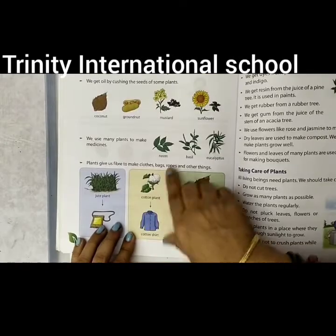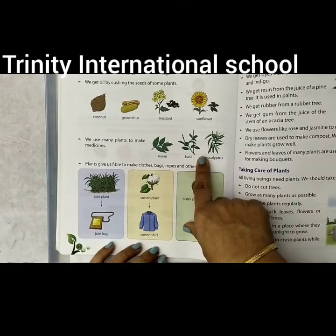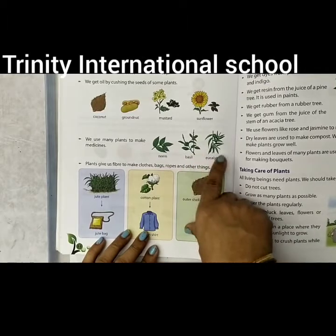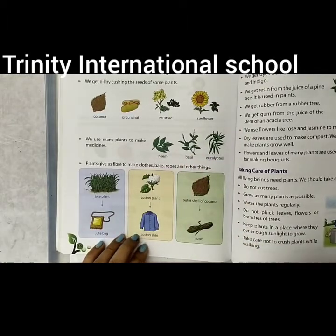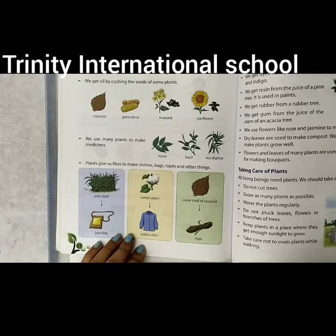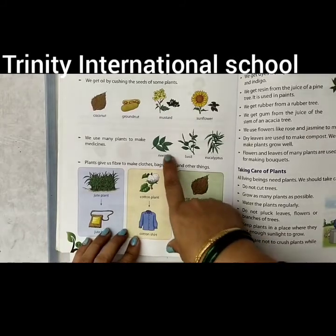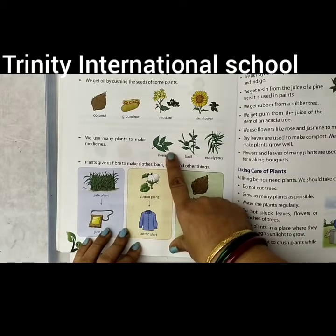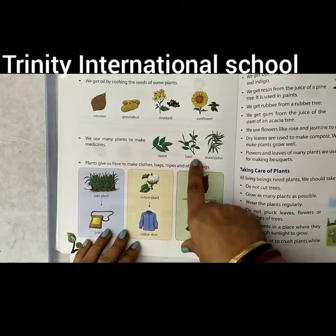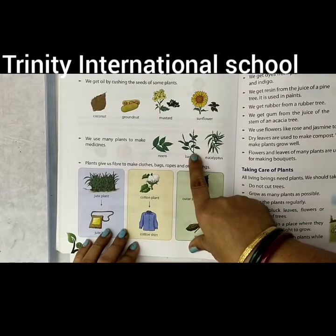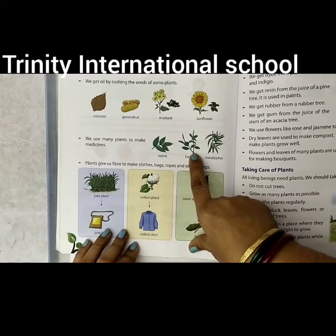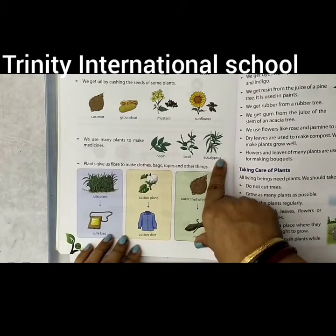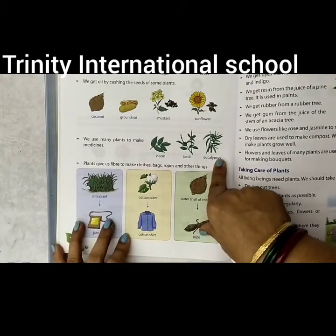Some plants are useful for medicinal purposes. Neem, basil — that is tulsi — and eucalyptus are plants from which we can get herbal medicines. The neem plant gives medicine which is very helpful for your skin. Tulsi, that is basil, is usually taken when you have cough and cold. Eucalyptus gives a medicinal oil which is used for ache problems.